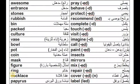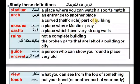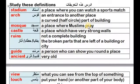Definitions. Stadium: A place where you can watch a sports match — مكان بتشاهد فيه مباراة الكورة. Arch: An entrance to another place — مدخل لمكان آخر. A curved part of a building, half circle — يعني منحنى جزء من مبنى، نص دائرة، اللي هي مدخل. Mosque: A place where Muslims pray — مكان حيث يصلي المسلمون.